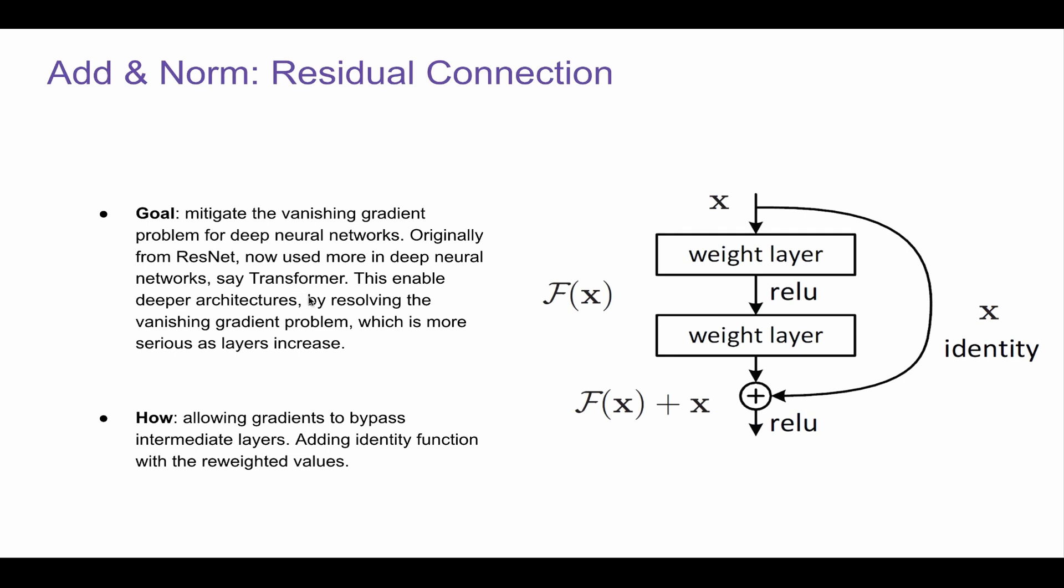This enables deeper architecture by resolving the vanishing gradient problem, which is more serious as layers increase. How it does is it allows gradients to bypass intermediate layers and adding identity function with the related values.